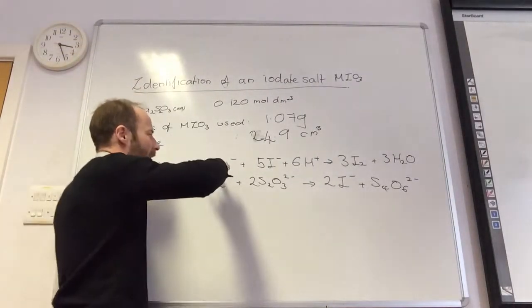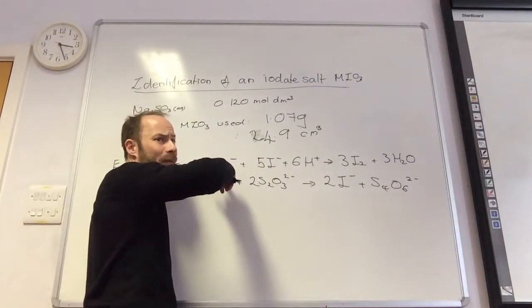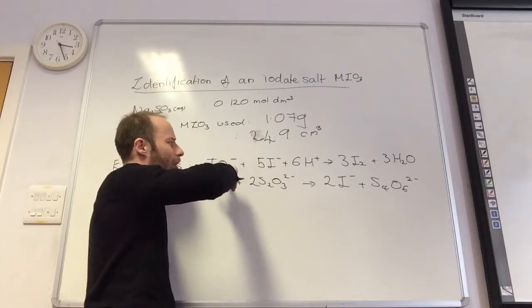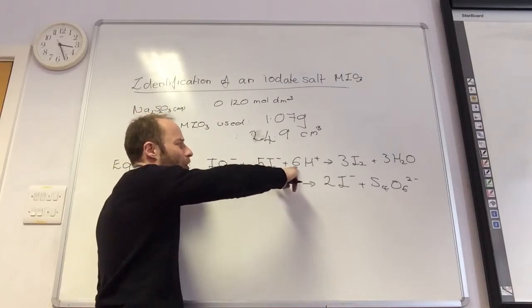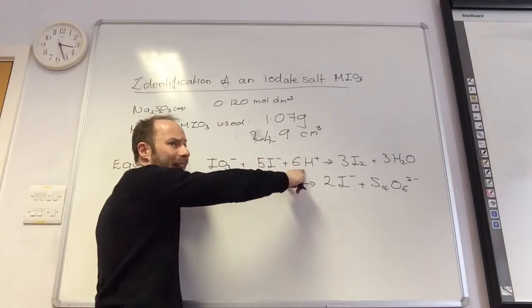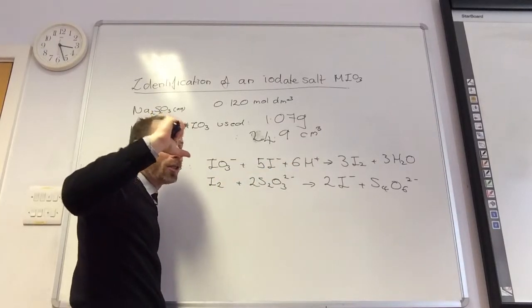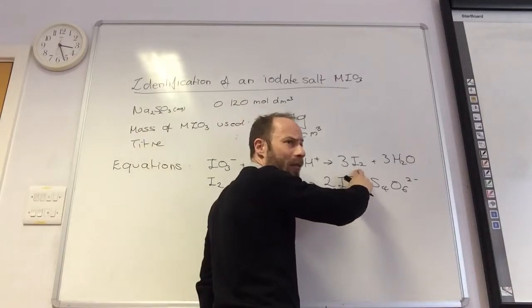So just to run through what we did. This was my unknown iodate salt. I took 25 centimeters cubed of that solution, and I added lots of iodide ions and lots of acid. The solution in the conical flask went like a brown color.